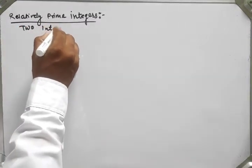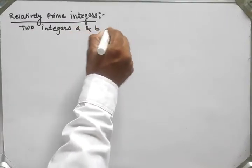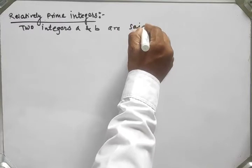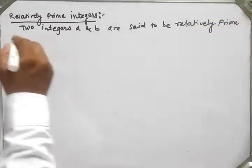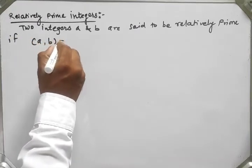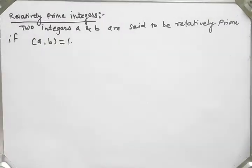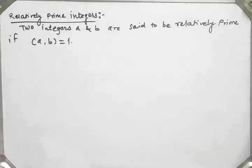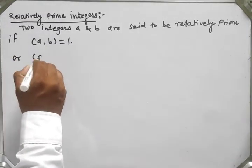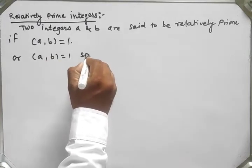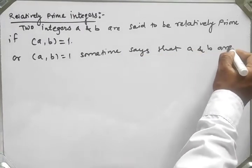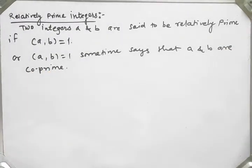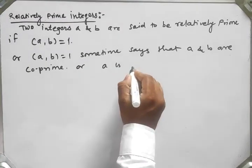Definition: Two integers A and B are said to be relatively prime if GCD of A and B equals 1. If this condition is satisfied, then we say that A and B are relatively prime. GCD of A and B equal to 1 is sometimes expressed by saying that A and B are co-prime, or it can be said that A is prime to B.